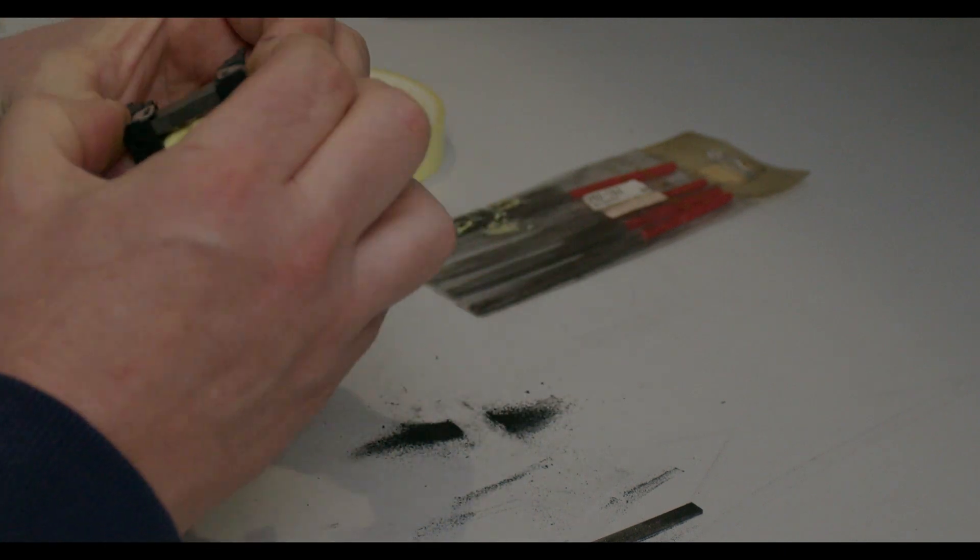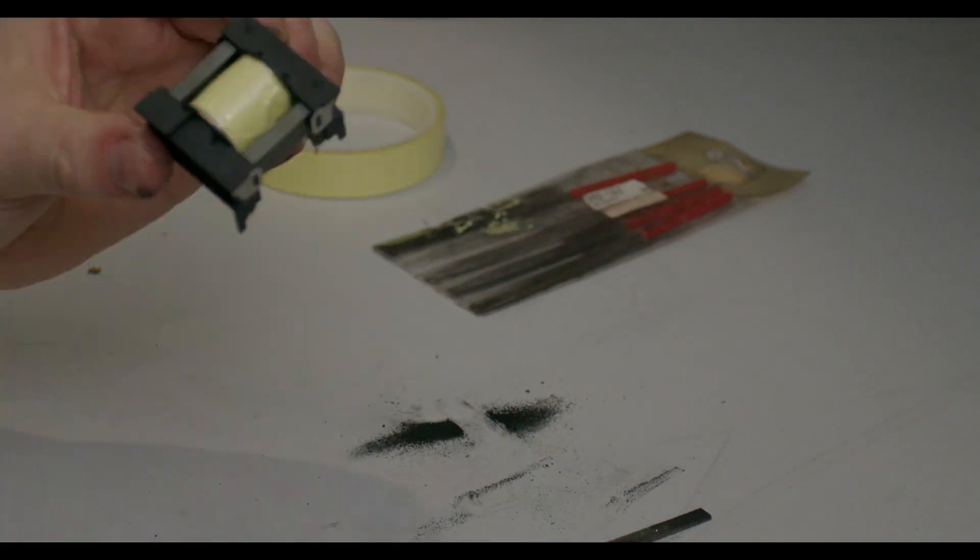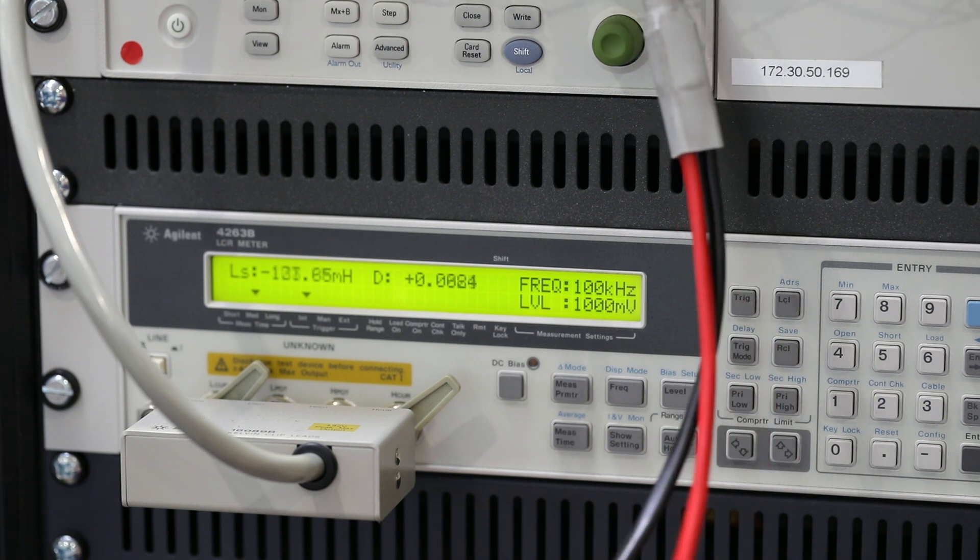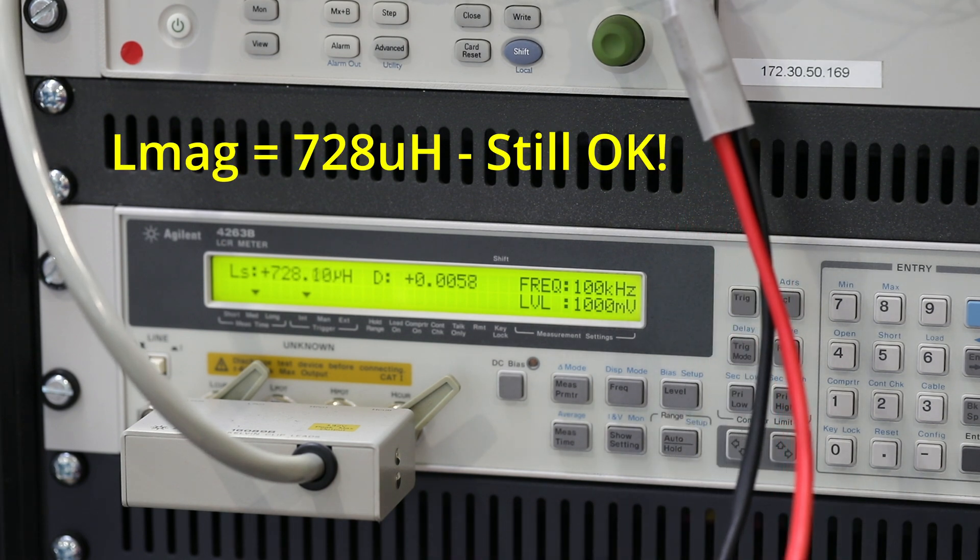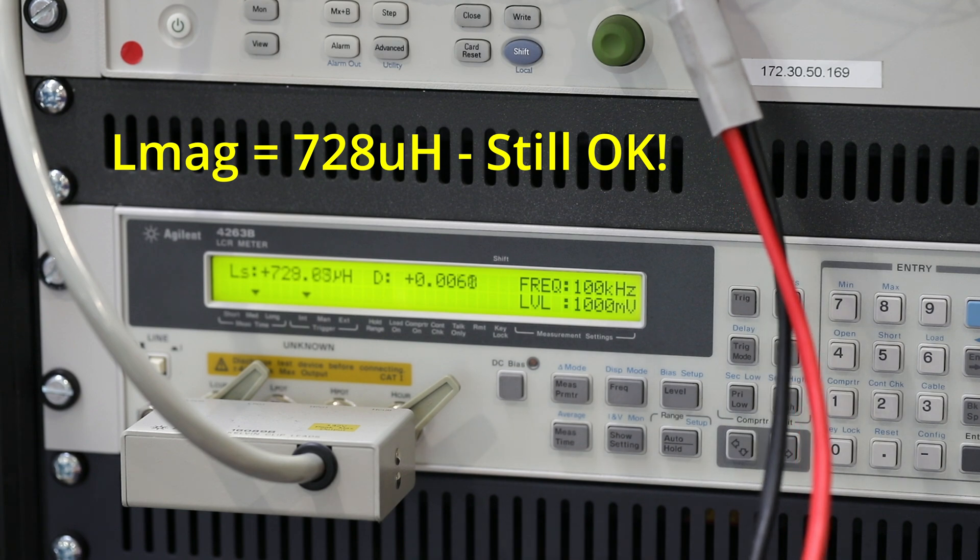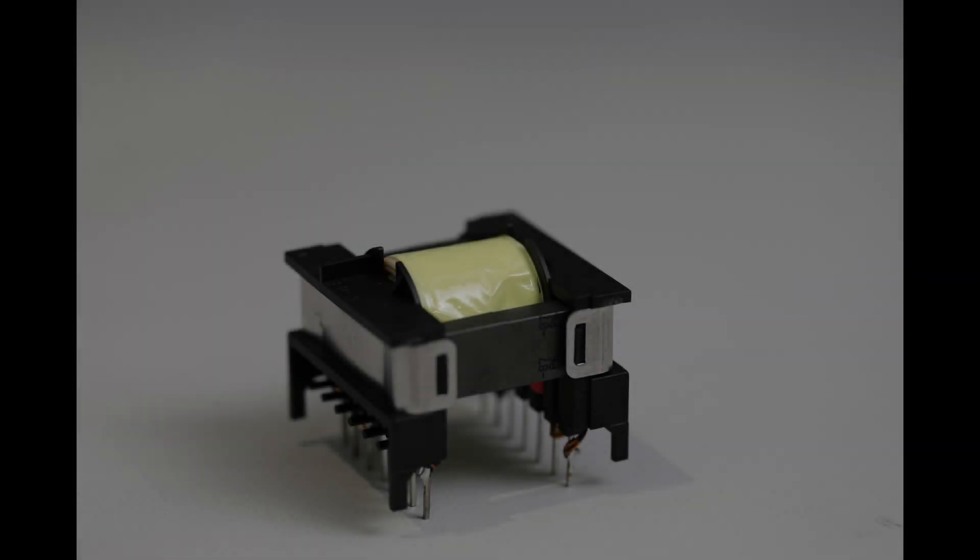With this ETD34 bobbin we use metal clips to hold the cores in place. The forces exerted by these clips cause the air gap to reduce slightly and this gives a slightly higher magnetising inductance of 728 microhenries. It's still in spec though.